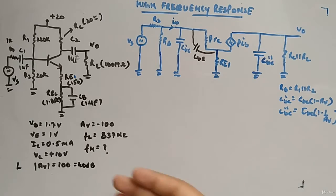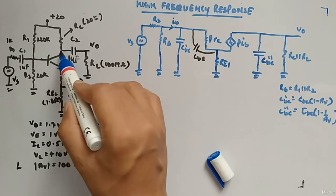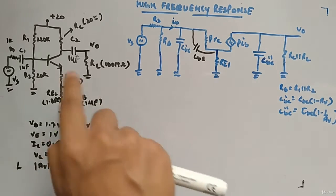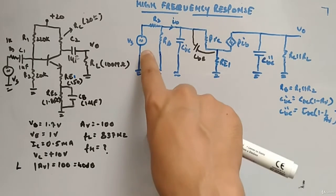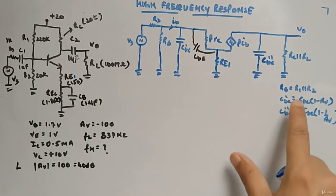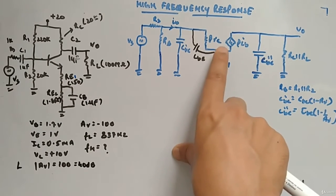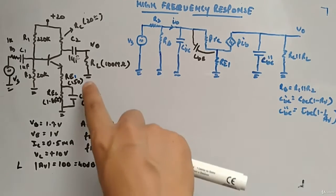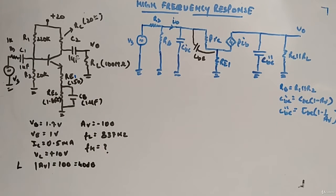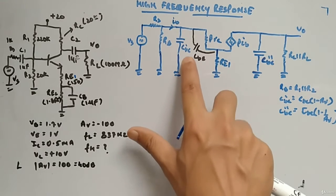So far we've seen the effect of external capacitors. Now we consider internal capacitors between base and collector, and base and emitter. In the high-frequency equivalent circuit: VS and RS remain as-is, C1 is shorted, RB = R1 parallel R2 connected to ground, then we have β·IB, and the internal capacitors CBE and CBC. I've applied the Miller theorem to CBC.